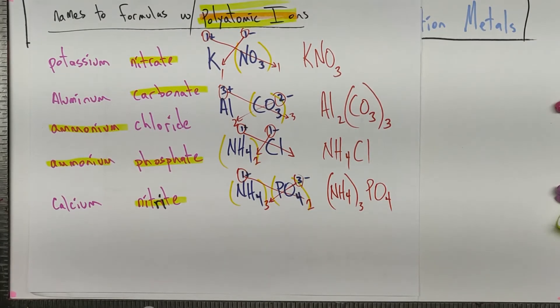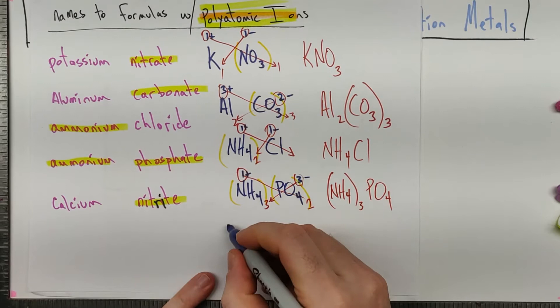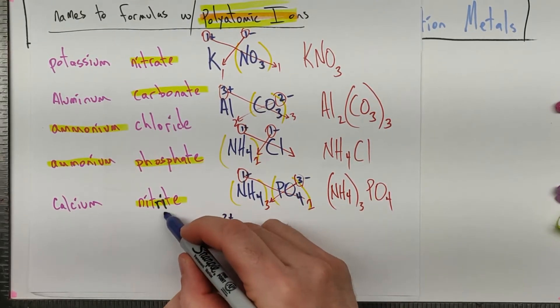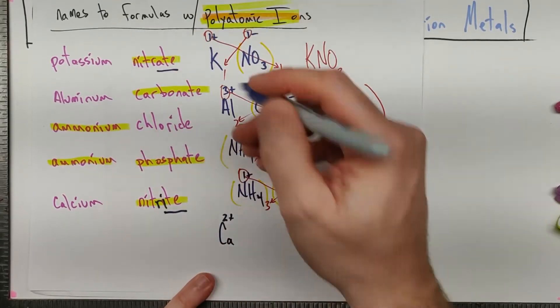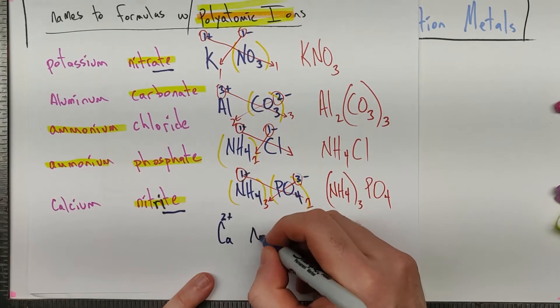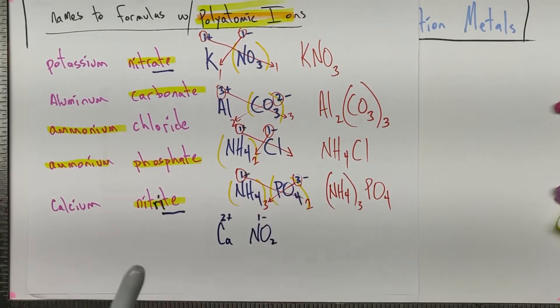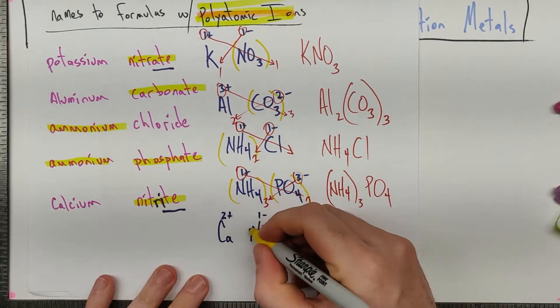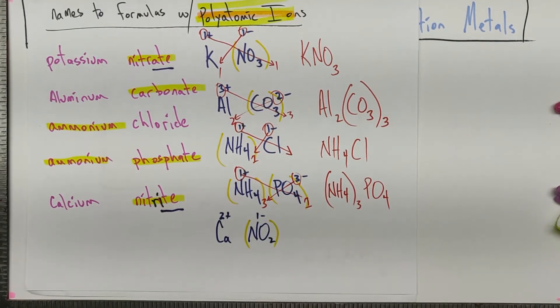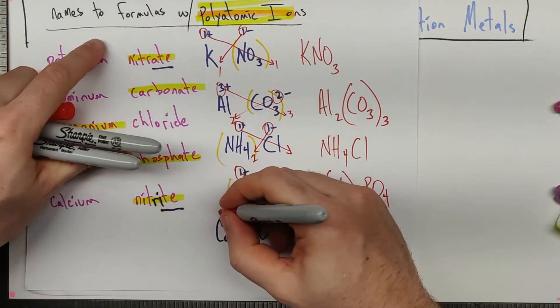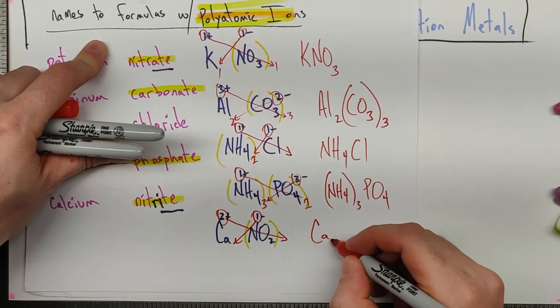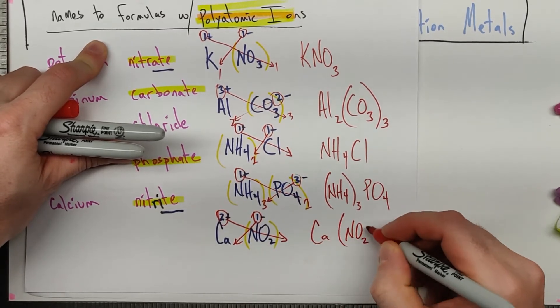Our last one here, calcium nitrite. You do have to be careful. Calcium, Ca2+, group two of the periodic table. Nitrite. Be very careful because these endings make a big difference. So nitrite is NO2 with a one minus charge versus nitrate, which is NO3 with a one minus charge. Looking at our polyatomic ion here, I'm going to put my parentheses. Two goes down there, and one goes down there. So we end up with Ca(NO2)2.